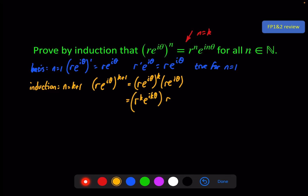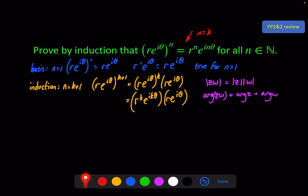We then multiply that by Re^(iθ). We use the properties from the previous video: for complex numbers z and w, the modulus of zw equals the modulus of z times the modulus of w, and the argument of zw equals the argument of z plus the argument of w. Applying these two rules gives us R^k times R for the modulus, and an argument of kθ plus θ. This relies on those two properties, not on index rules for complex numbers.